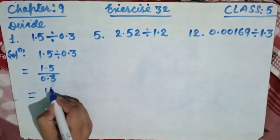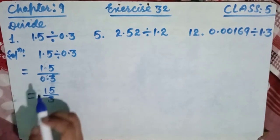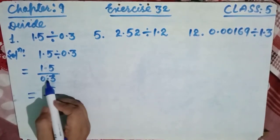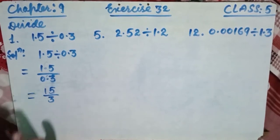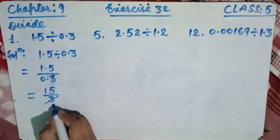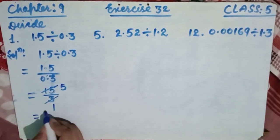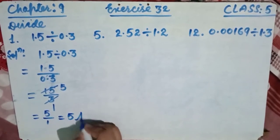Since the number of digits after the decimal is 1 in both numerator and denominator, we can remove the decimals and write it as 15 divided by 3. So 3 times 5 equals 15, giving us 5 over 1, which means the answer is 5.